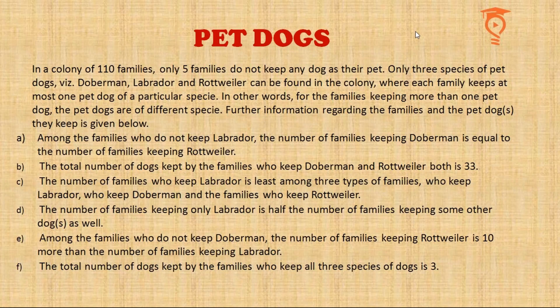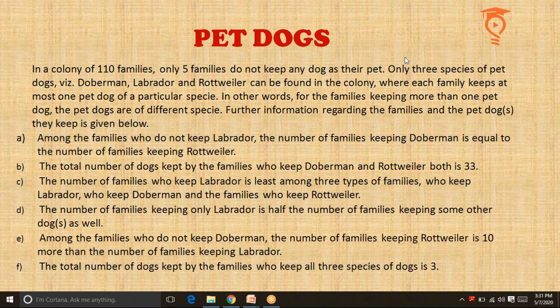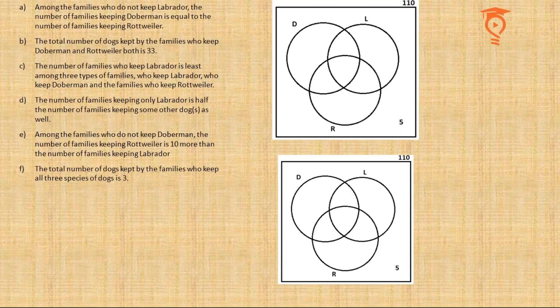Please read this — it is a single-slide information set. It's a three-set Venn diagram question that also involves a little algebra, inequalities, and language interpretation skills. I have made two Venn diagrams — you'll understand why two shortly. We'll start with the first one. There are 110 families overall and five of them have no dogs, which means the sum of all numbers entered within the circles will add up to 105.